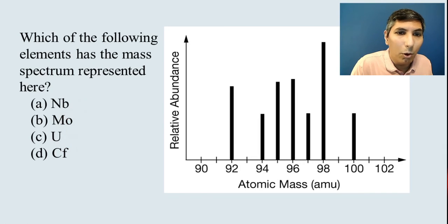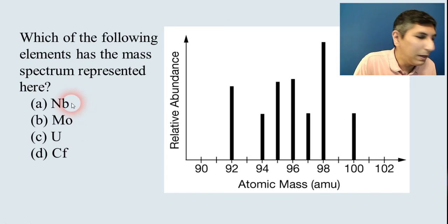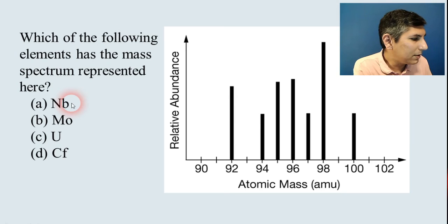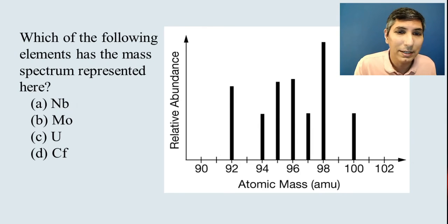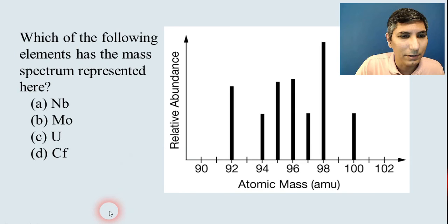Now, the only other answer that's even possibly reasonable is niobium NB. But if I look at the table, it has an atomic mass of about 92.91, which that's not really in the center. As you eyeball this, try to get somewhere in the center of that weighted average. That's why molybdenum is the correct answer for this.